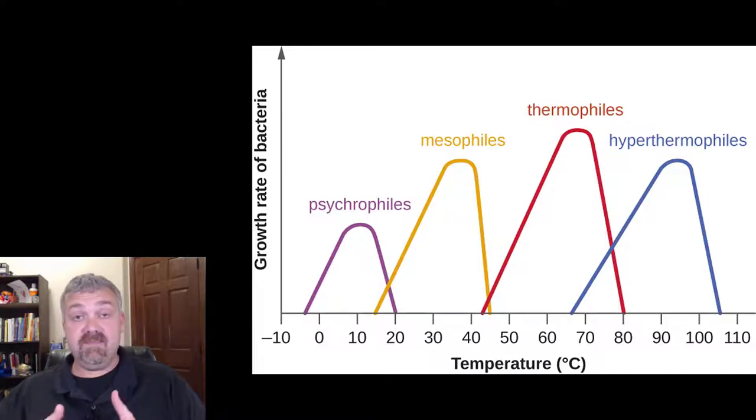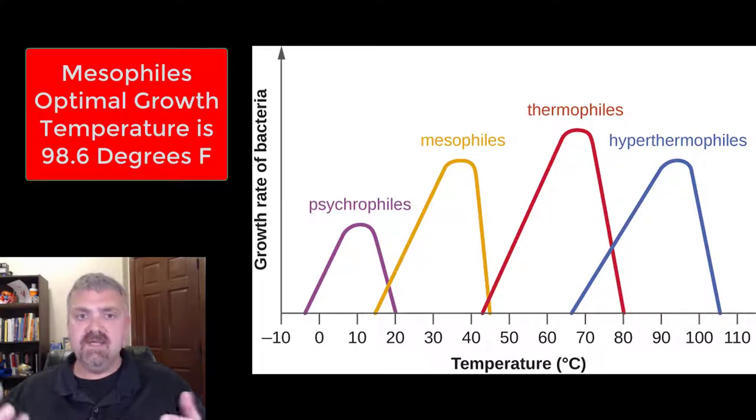So the reason we care so much about the mesophiles is their optimal growth temperature is 37 degrees Celsius. The reason that's so important is because that's 98.6 degrees Fahrenheit. So obviously organisms have evolved and adapted to prefer the temperature of their hosts, and it shows you why we have to care so much about these.